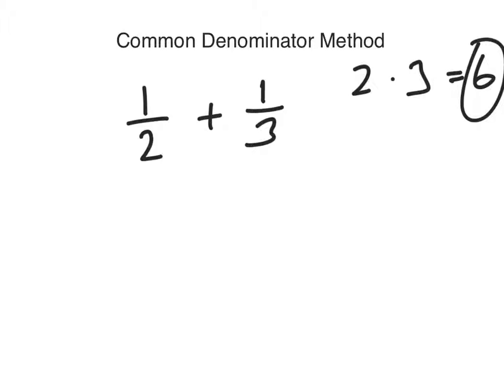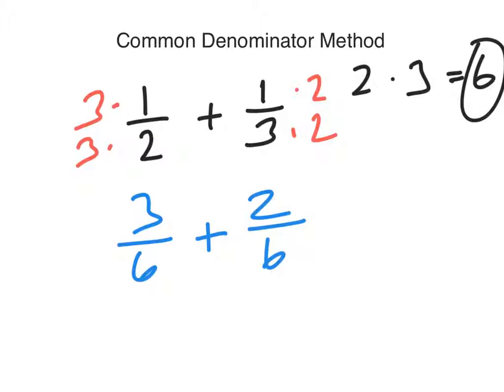So what we need to do is we need to times the top and bottom. So we'll times the top and bottom by three for the first term, and the second term we'll times the top and bottom by two. That way we'll get a common denominator of six. So when we do that, we get a new fraction. We get three sixths plus two sixths. Alright, so then we can add those two together. So we have three sixths plus two sixths equals five sixths.